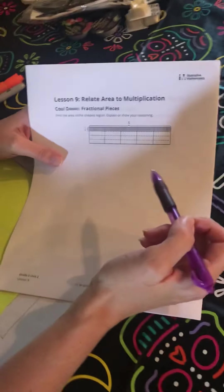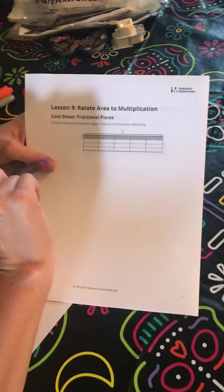Okay we're gonna go over the cooldowns today. For the first one from lesson 9, you can look at your graded paper as I'm going through this. It says to find the area of the shaded region, explain or show your reasoning.